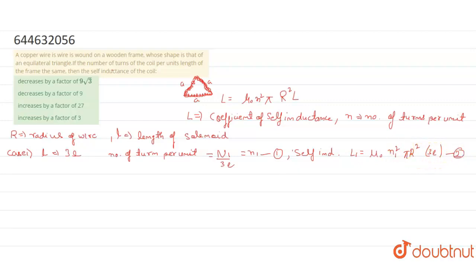Similarly, in case 2, L2 is equal to again mu naught n squared pi r squared upon 9L. That is the fourth equation.